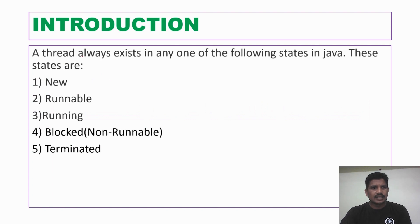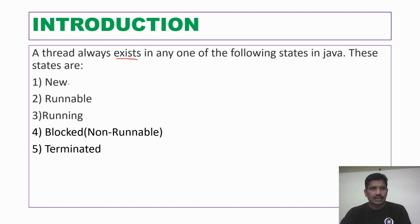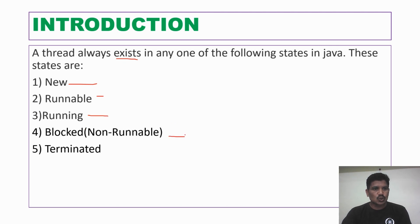Once a thread has been created, it always exists in one of the following five states: new state, runnable state, running state, non-runnable state (which is also called the blocked state), and terminated state.